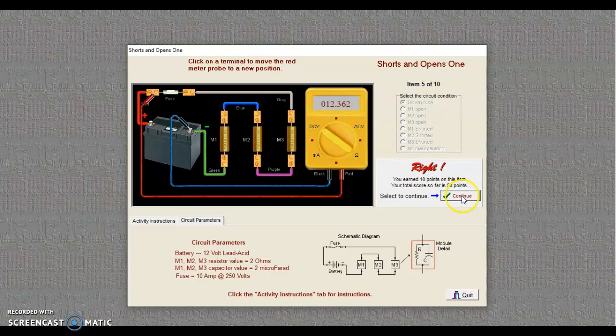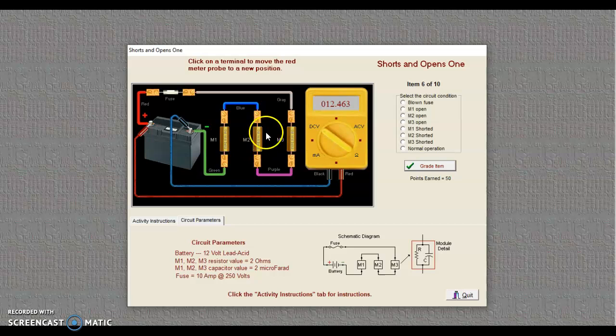And let's grade that item. We're good there. Before we hit continue, return to the positive. We go ahead and hit continue. Source voltage, 12.4. So, again, I'm going to take a different strategy and jump over here.